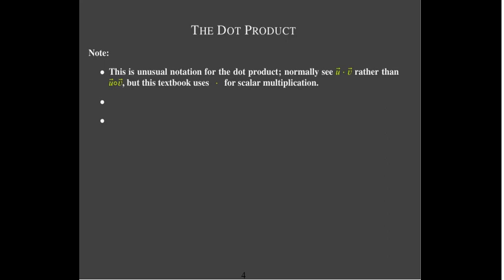Now a few notes. In particular, if you have taken another class in linear algebra or multi-variable calculus, you may see a dot used rather than a small circle to represent the dot product. But in this course we really want to emphasize the difference between multiplication by scalars and the dot product. So we're going to use this small circle to represent the dot product and reserve the actual dot for scalar multiplication.